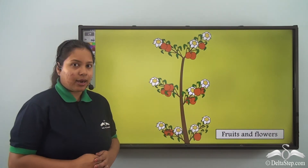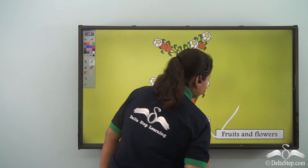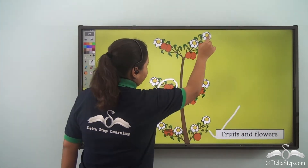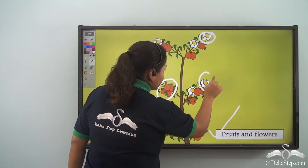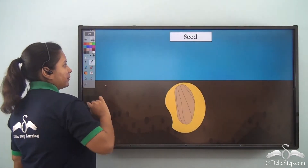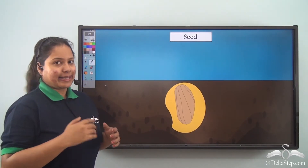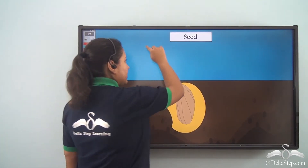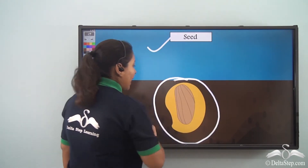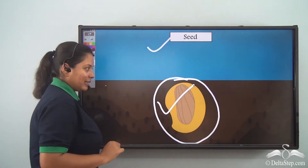Other than the above four, the plant also has fruits and flowers — fruits and flowers also grow on the plant. Now comes the tiniest part: this is the seed, and this is very very important as a new plant grows from the seed.